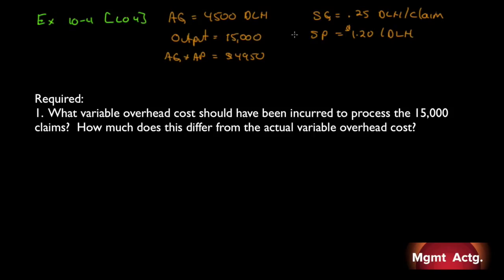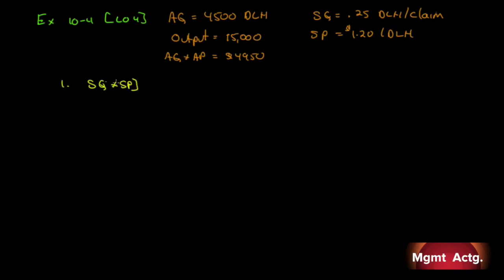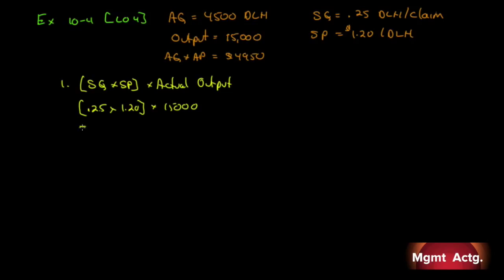With these variables we can solve any problem. During exams, look for AQ, AP, SQ, SP, and actual output — find those five and you're ready to go. Number one: what variable overhead cost should have been incurred to process fifteen thousand claims? Standard quantity times standard price times actual output: 0.25 times one twenty times fifteen thousand equals forty-five hundred dollars. We actually incurred forty-nine fifty, so forty-nine fifty minus forty-five hundred equals four hundred and fifty dollars unfavorable.